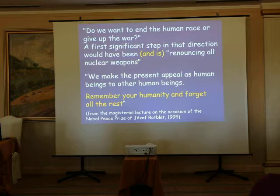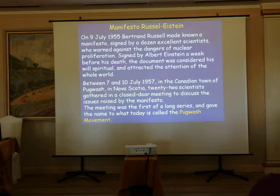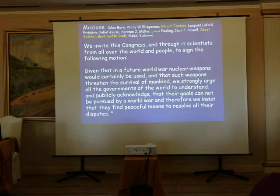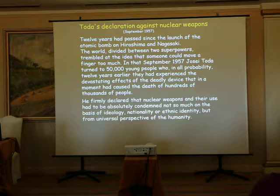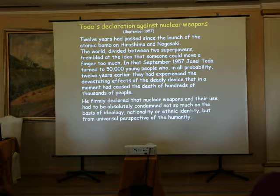We have the very well-known Russell-Einstein manifesto, available everywhere on the internet, which invited scientists from all over the world to sign a motion against nuclear weapons. And there is another, not so famous manifesto — the Toda manifesto. Joseph Toda was the second president of Soka Gakkai International, and in September 1957, in front of 50,000 young people, he declared a manifesto against nuclear weapons.